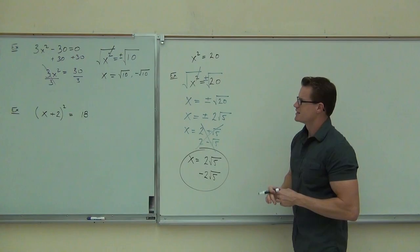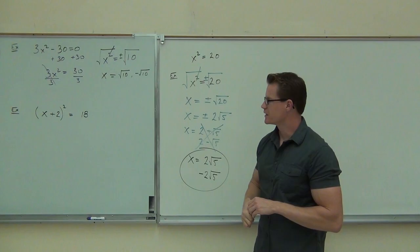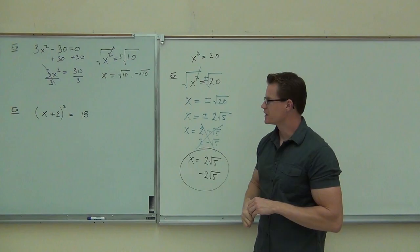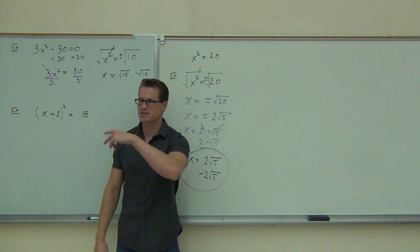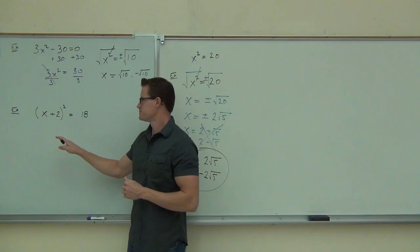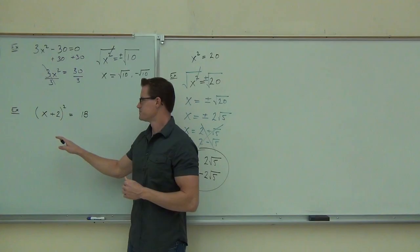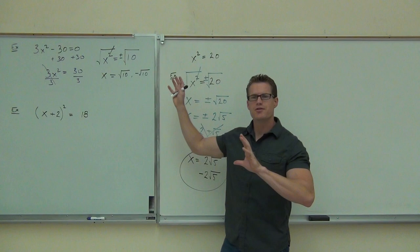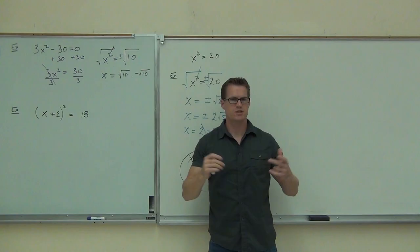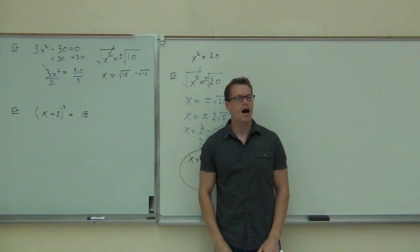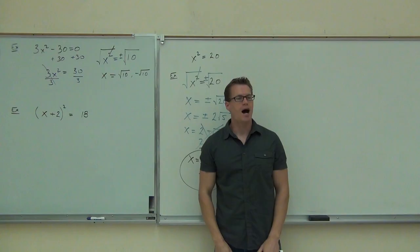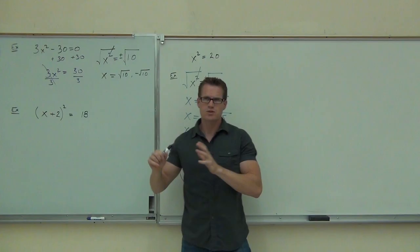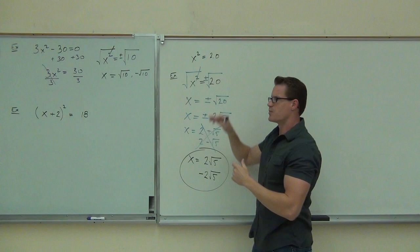Now there's a new example on the board — something like (x plus 2) squared equals 18. Does that look anything like what we've been doing? Not really, but think about it. The reason the earlier problems worked is I had something being squared, equals a number, and I got rid of the square with a square root. Do I have something squared, equal to a number here? Yes.